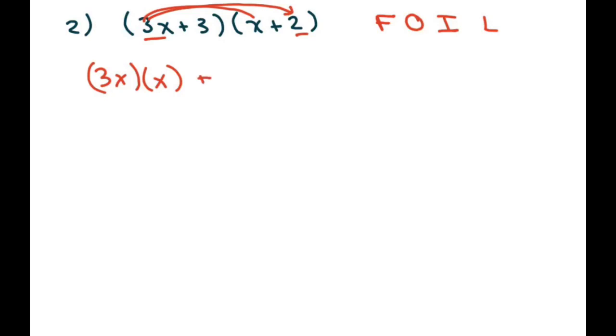This is your inner, plus 3 times x. And your last are the last two terms, which is 3 times 2, which is just 6. So basically this is your first, outer, inner, and last.